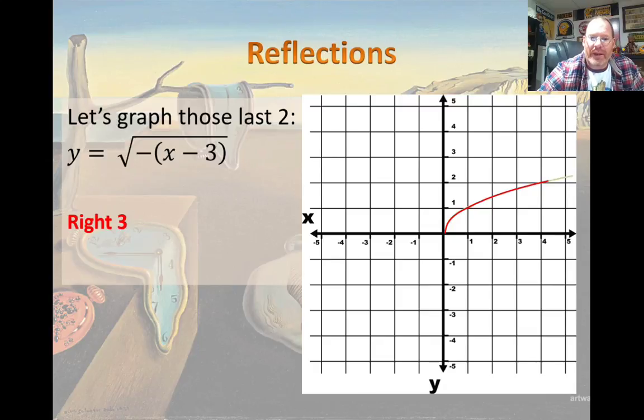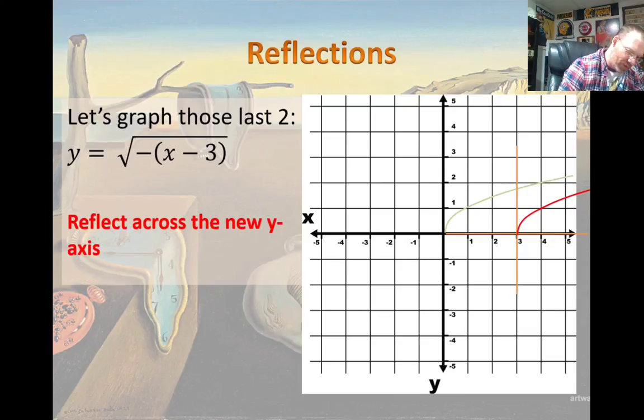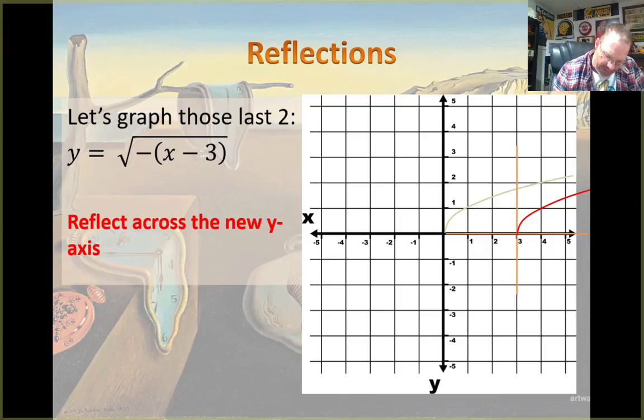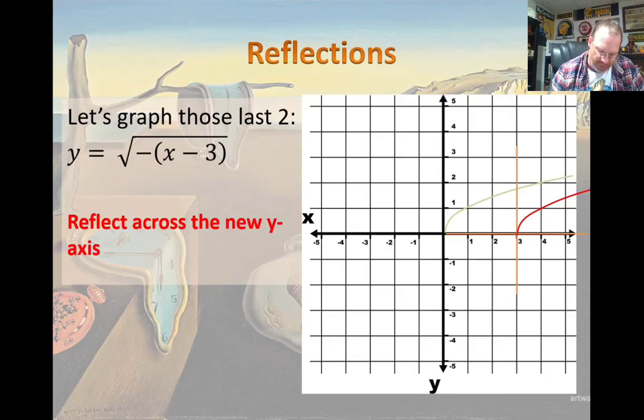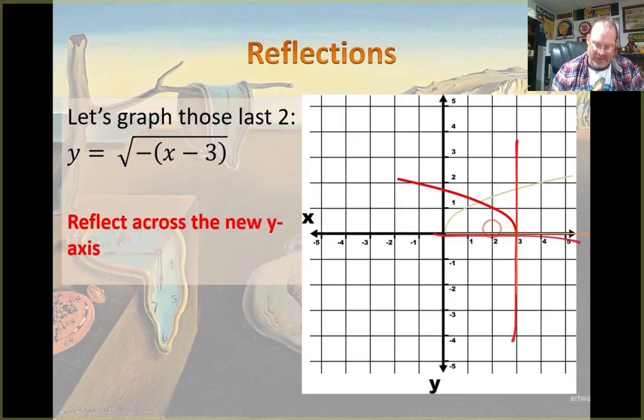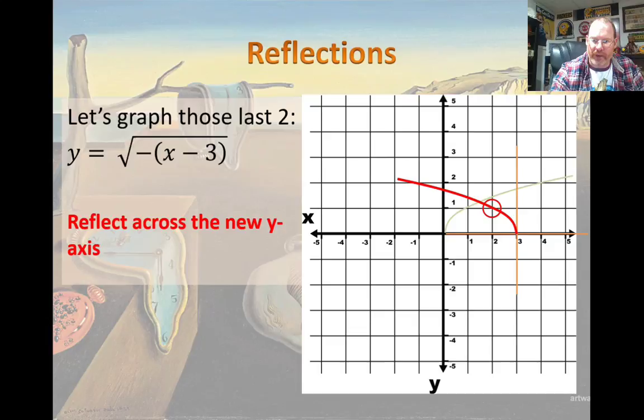Next we know that it moves right 3 spots. And the last thing is that it's reflected across the new y-axis. So I'm not talking about taking this thing and reflecting it way over there. The reason that we did those transformations first is because this is essentially our new axis. Let me backtrack there.